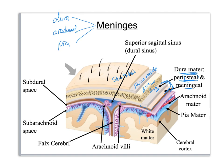The next layer is the arachnoid mater — this entire section here. It has a membrane and all these little strands sitting down in here; it's also going to be filled with CSF, and you will also see blood vessels in here. The arachnoid mater has a special feature called the arachnoid villi — also called arachnoid granulations. This purple membrane pokes out through the meningeal layer of the dura mater into the dural sinus, so CSF in here can go out, diffuse across the membrane, and enter the venous blood.